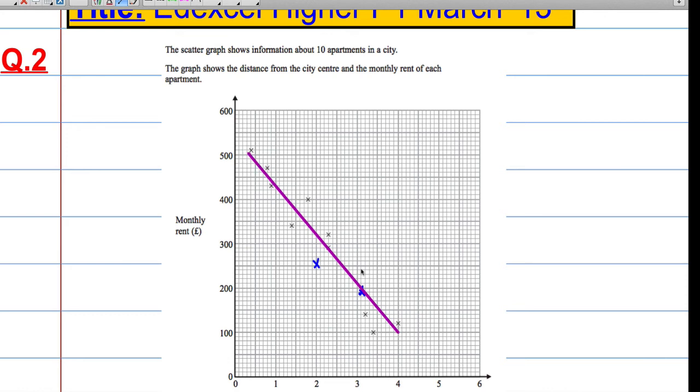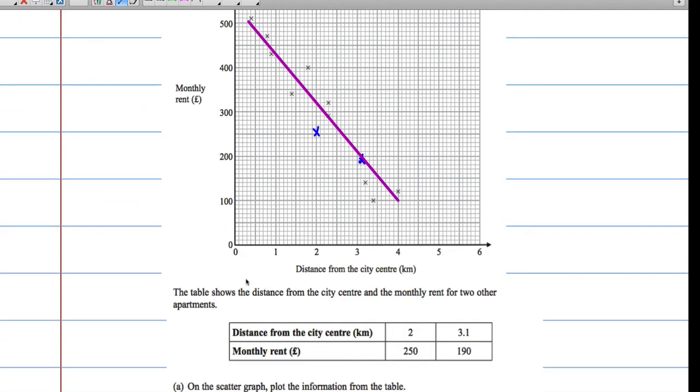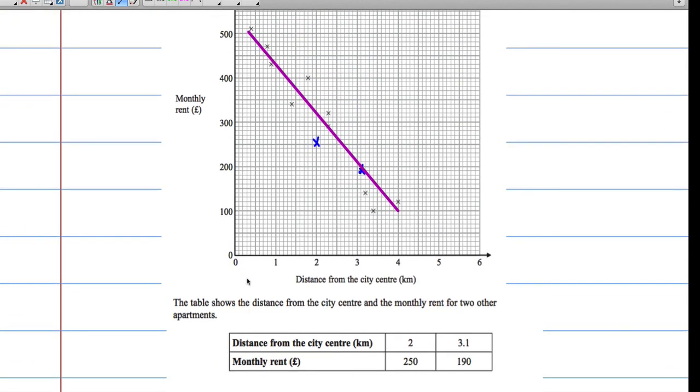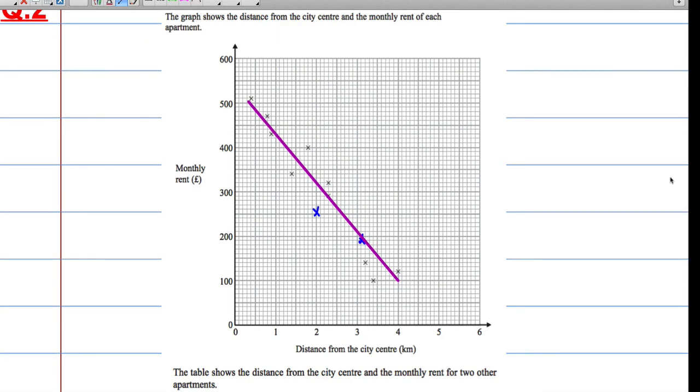The apartment is 2.8 kilometers, so let's go to 2.8. 2.8 is going to be here, so I'm going to draw a line up to where it hits my line and across.